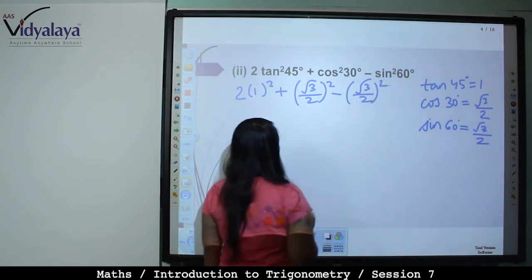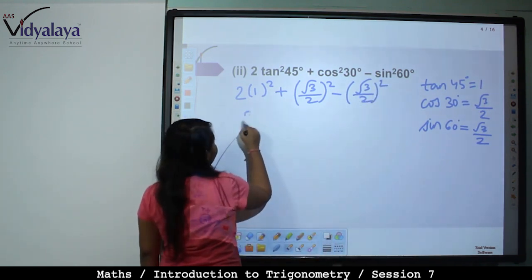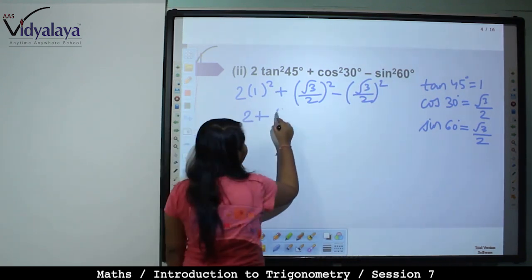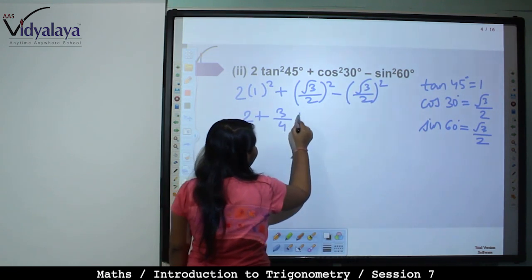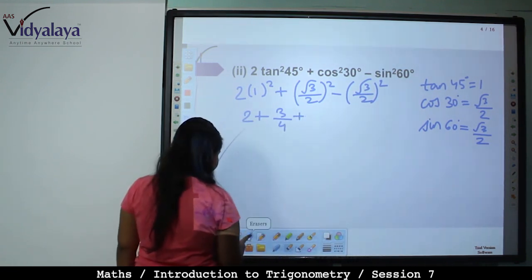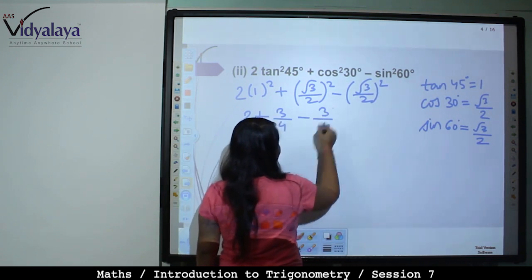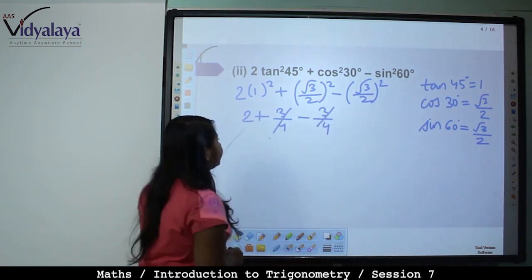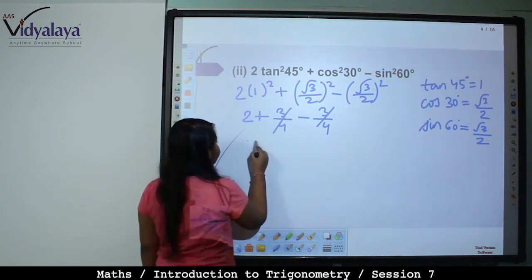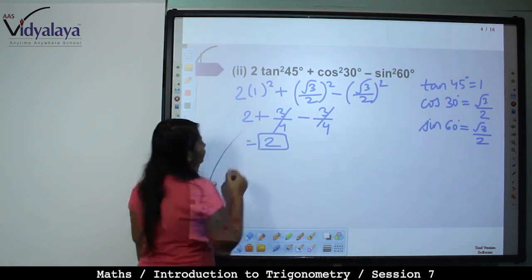That is 2 into 1 is 2, plus root 3 into root 3 is 3 and 2 into 2 is 4, plus 3 by 4 minus 3 by 4. The plus 3 by 4 minus 3 by 4 cancel out, so what remains is 2. Hence your final answer is 2.